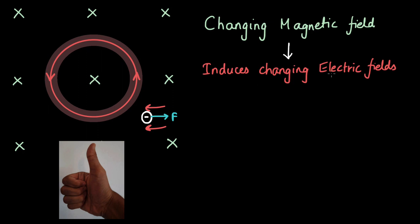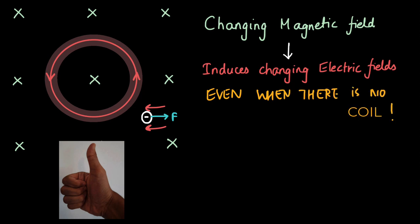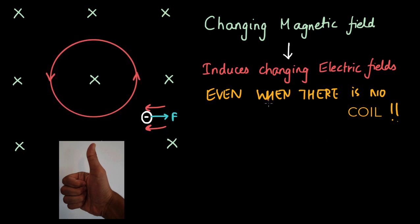Now here's the strange part. These electric fields are induced even when there is no coil. Whether there is a coil or not, if we make the coil disappear, there will still be an induced electric field, because the induced electric field does not require electrons to be there — it is induced as a result of the changing magnetic field. Electric fields can be induced in space or vacuum, and these form throughout space concentric to each other, with a smaller one here and a bigger one farther out.